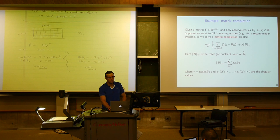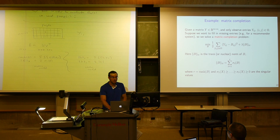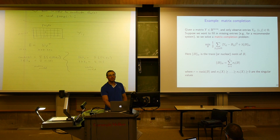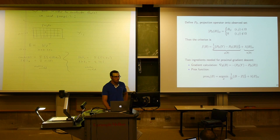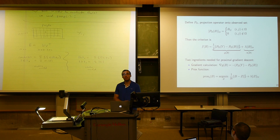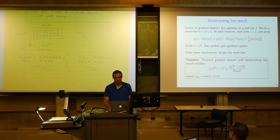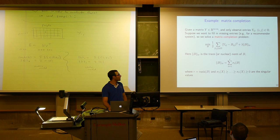Proximal gradient provides a simple and relatively fast algorithm compared to the alternatives. In absolute terms, it's still slower than something like ISTA for the lasso, but it's a pretty fast algorithm for how difficult this problem is. We write the criterion using a projection operator onto the observed set: P_omega of B sets to zero everything not observed, and the loss term becomes the Frobenius norm of P_omega(Y) minus P_omega(B), squared.